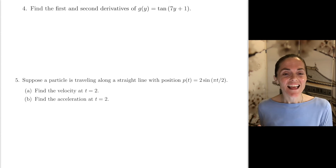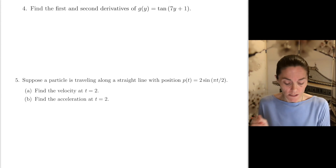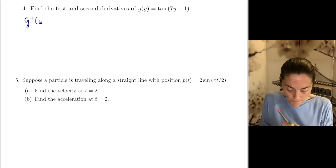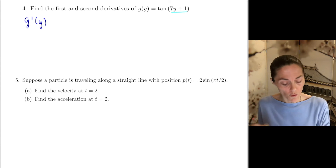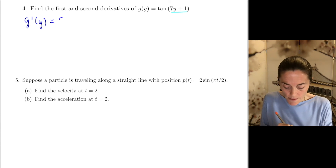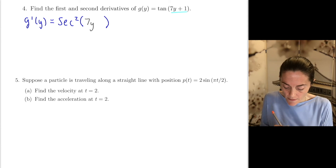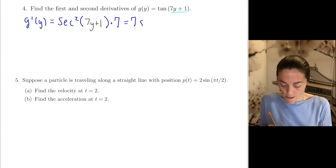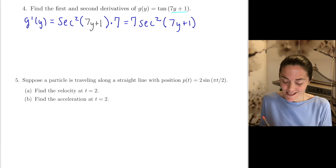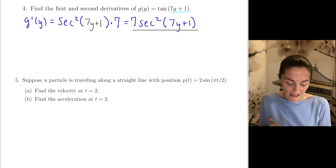Number 4. This one was also on quiz 4 from last fall. We want to find the first and second derivatives of the function g. If you look at g, we see an inside function — this is going to be chain rule, where we first take derivative of the outside. Derivative of tangent is secant squared, then evaluate it at the inside. Multiply by the derivative of the inside function, which is 7. So we have 7 secant squared of 7y plus 1. This is the first derivative.